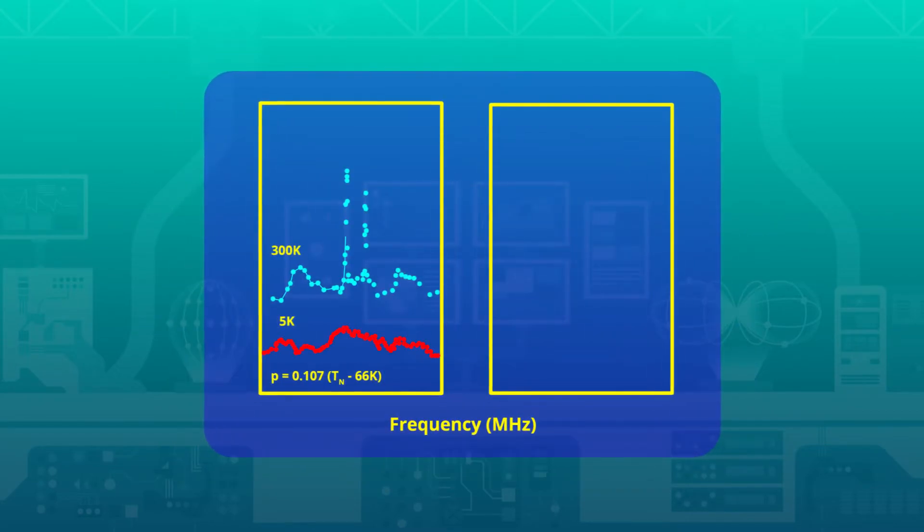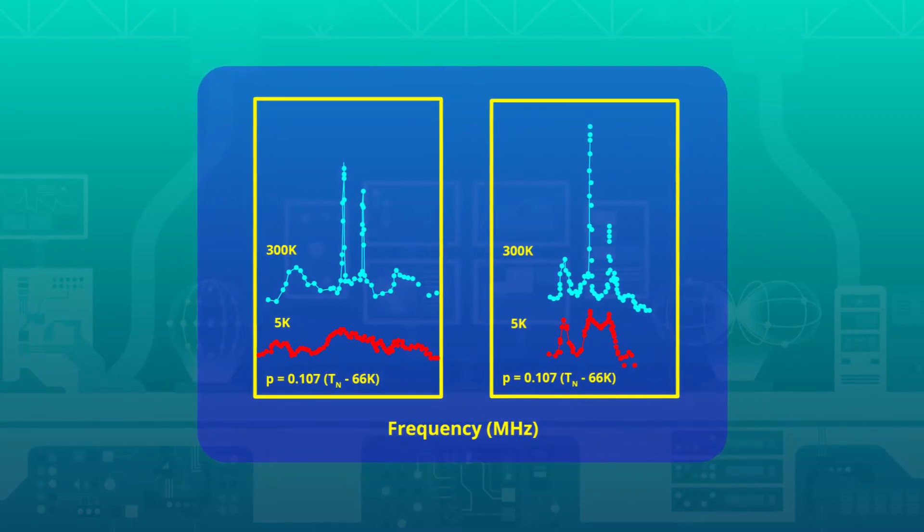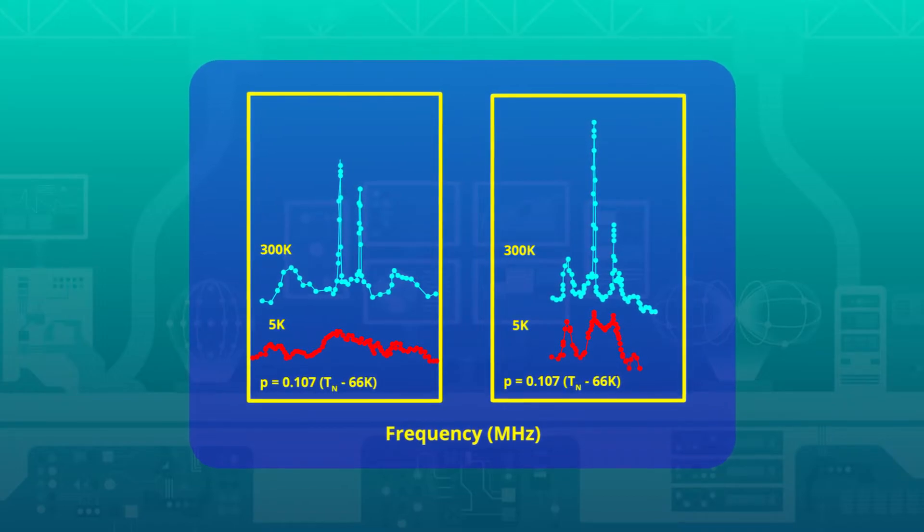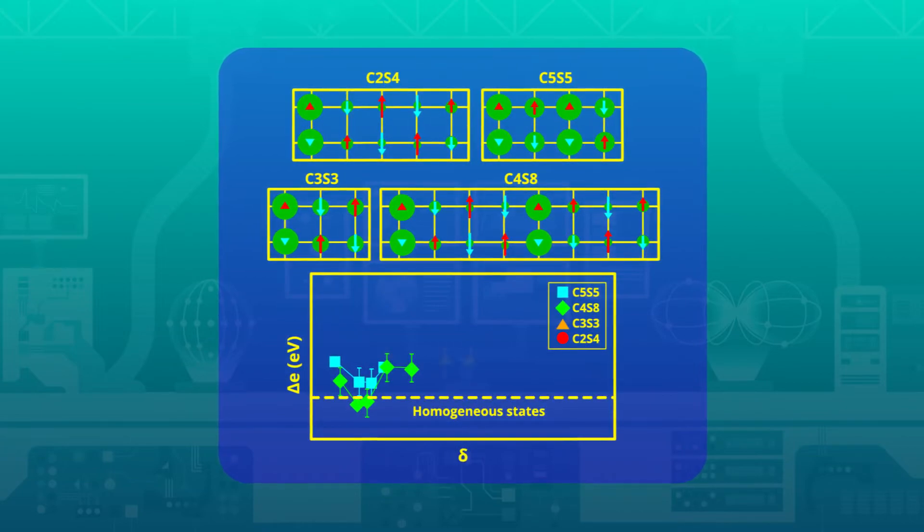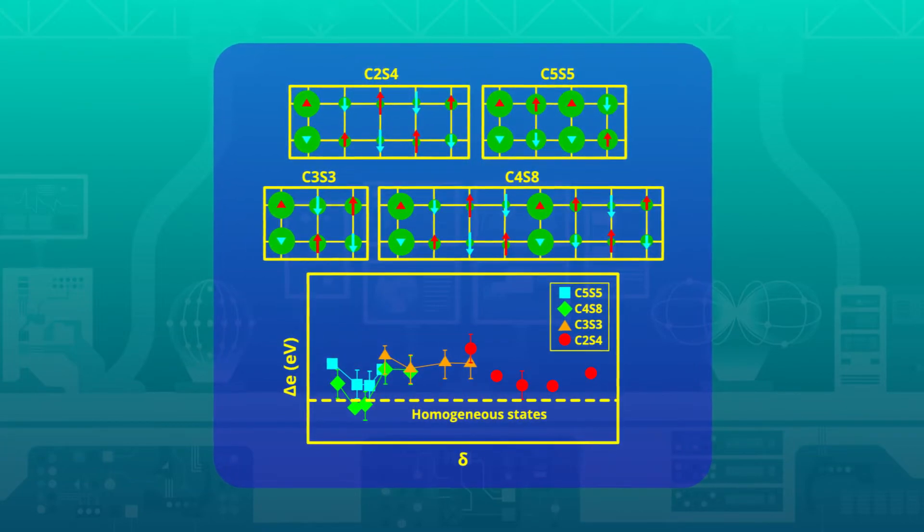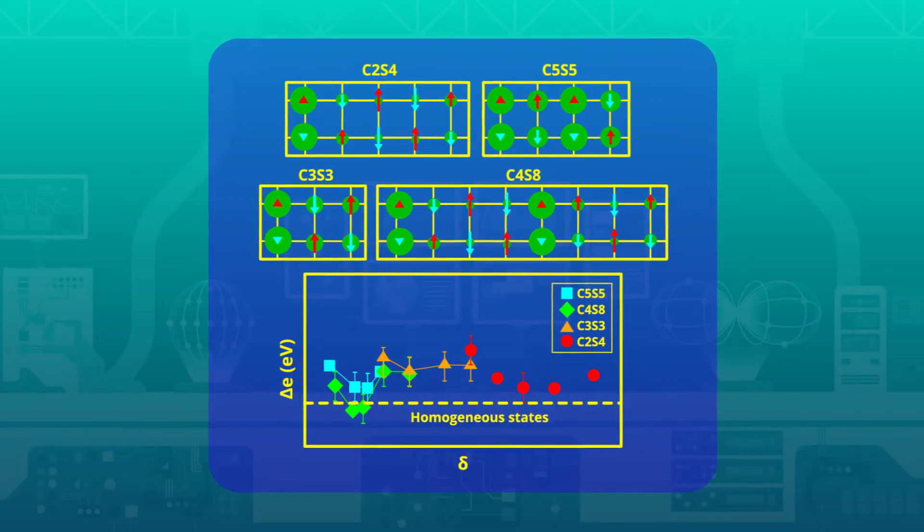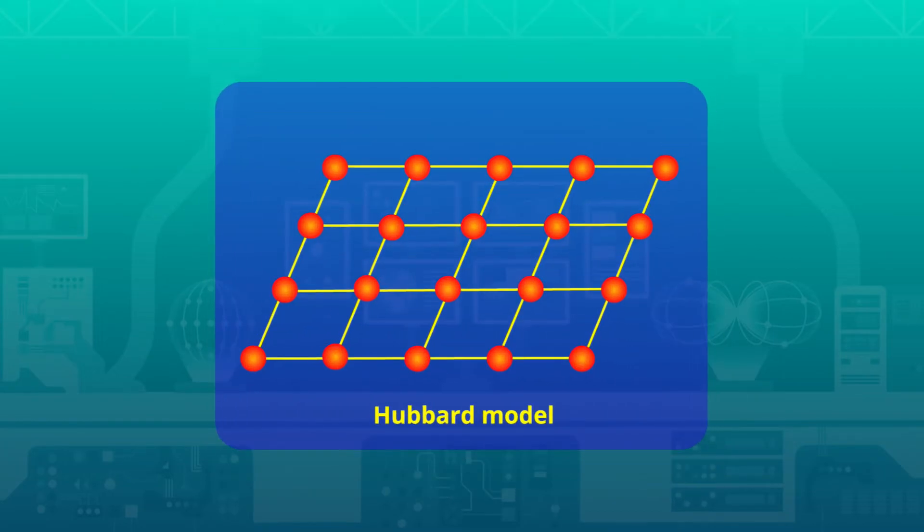Kawasaki and colleagues employ nuclear magnetic resonance to probe charge order and fluctuations. On the theoretical side, Imada explores the relationships between charge order and superconductivity and how to measure them using spectroscopic methods.